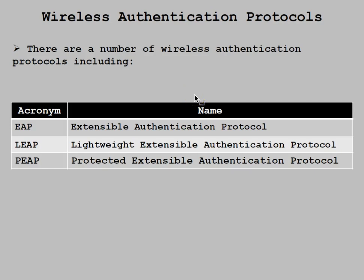Just like we had authentication protocols on the wired side, it would make sense that we also have the same capability on the wireless side. So anything you can do on one, you'll be able to do on the other. There are three different types of authentication protocols you should be familiar with: Extensible Authentication Protocol, Lightweight Extensible Authentication Protocol, and Protected Extensible Authentication Protocol.